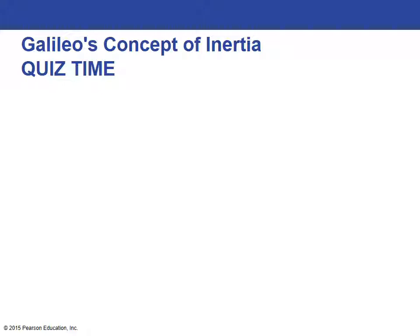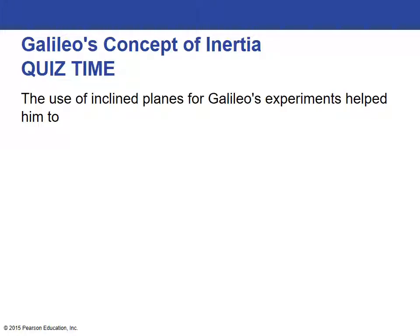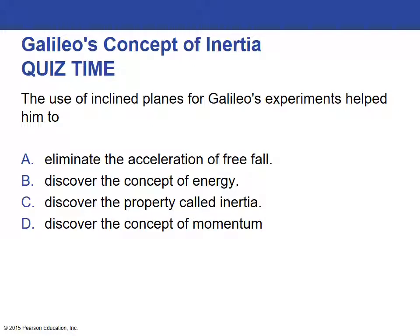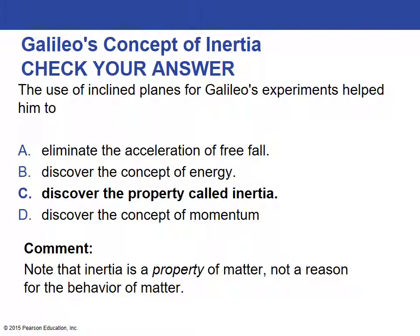Let's do a little quiz around Galileo and inertia. Those inclined planes that Galileo was using the ball with — did they help him identify acceleration in freefall? Did they help him lock into the concept of energy? Did they help him develop his ideas around the property of inertia? Or did they work with the concept of momentum? What Galileo concluded from the inclined planes is the property we call inertia. Inertia does not explain the behavior of matter — it simply is the behavior of matter.